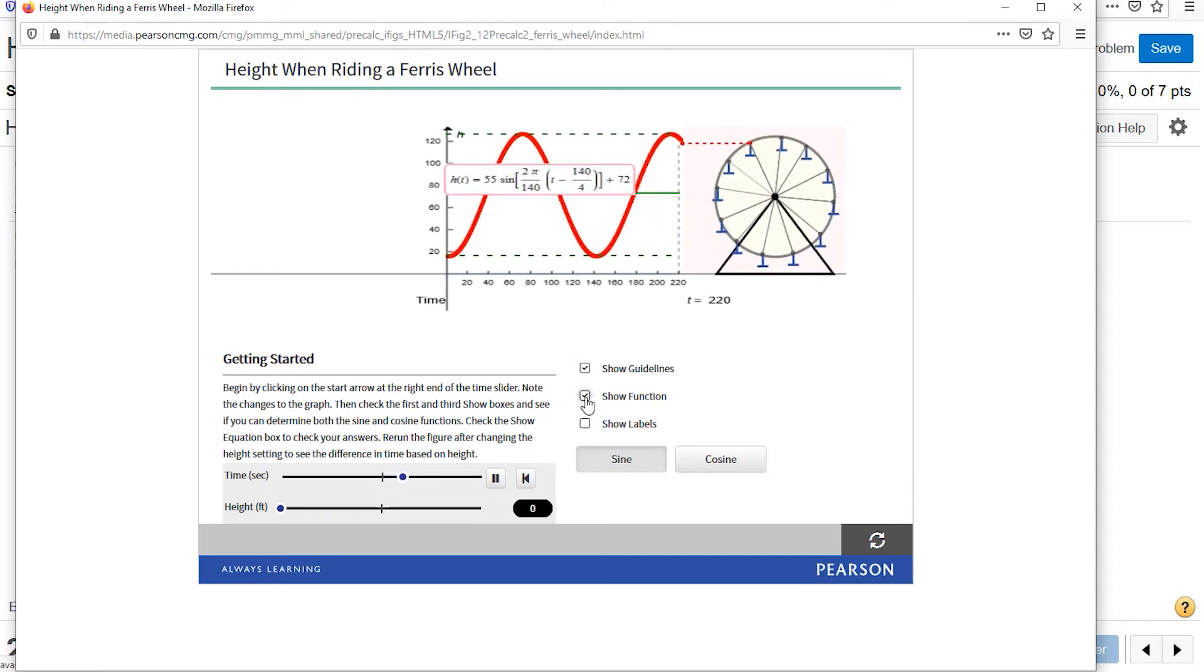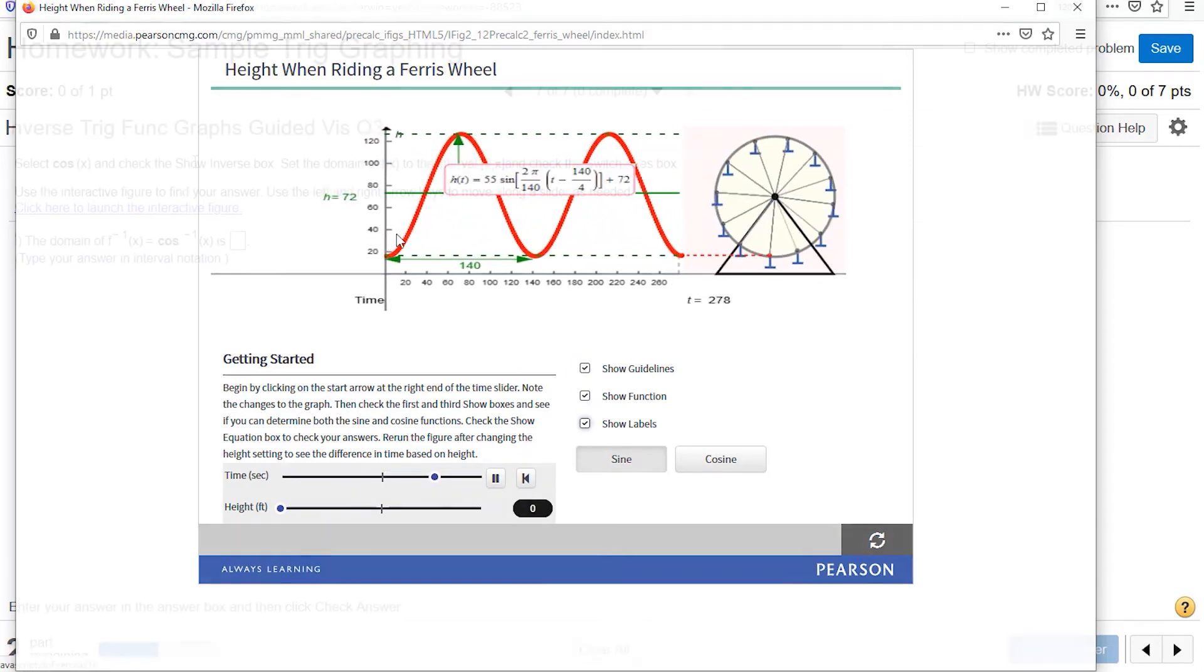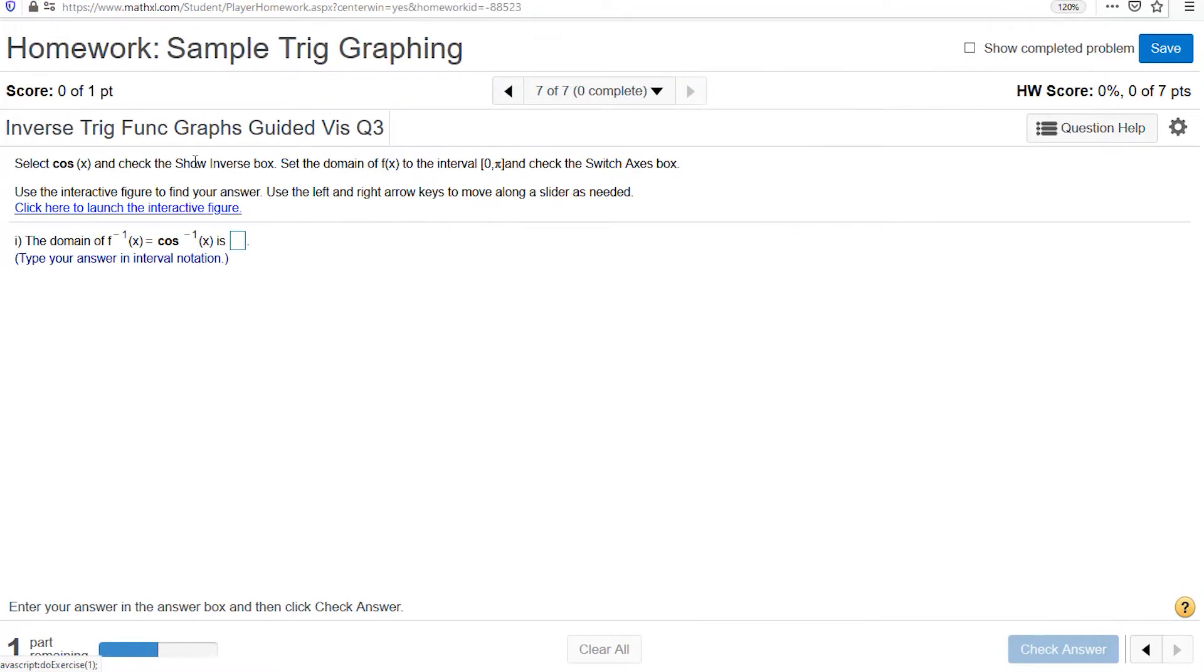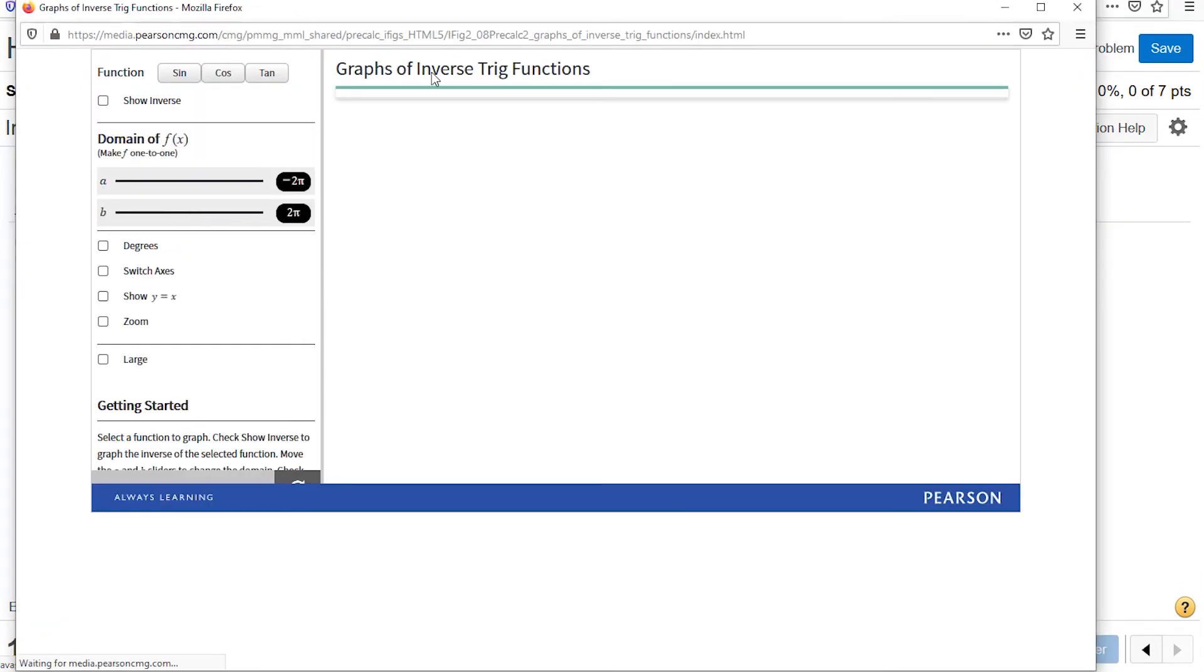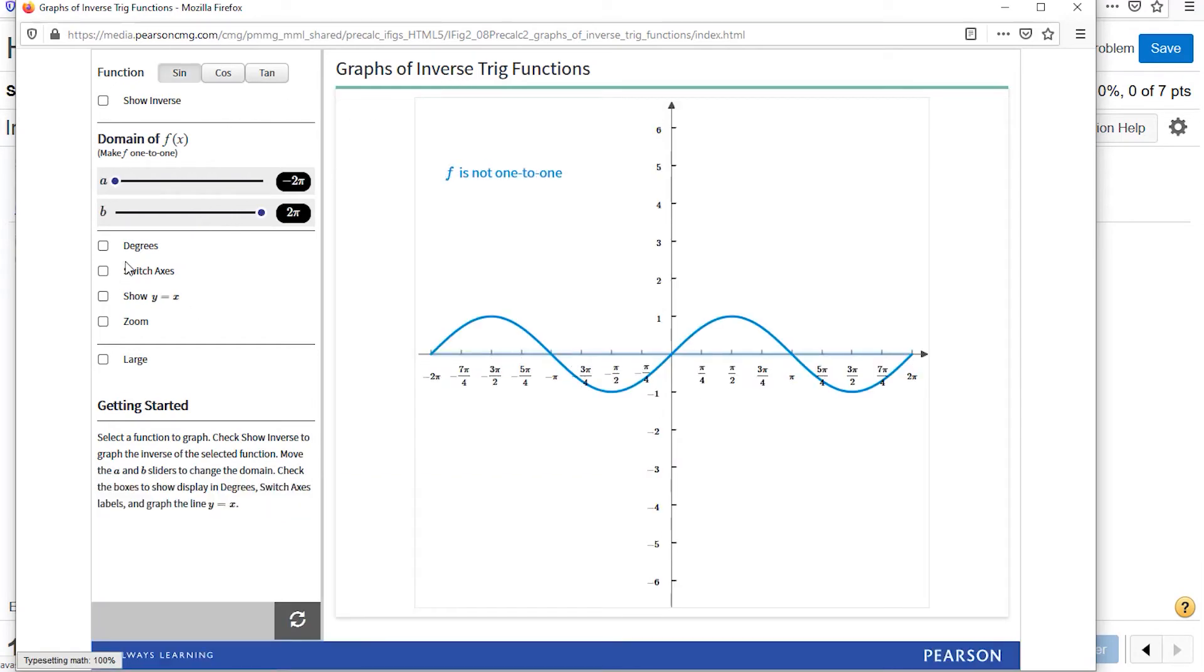Show grid lines, show the function, show labels. In my experience students can really struggle with the visualization of inverse sine and cosine and tangent. This particular interactive figure allows you to show the inverse, see that it is not a one-to-one function, and then start restricting your domain to see where does this become a one-to-one function. So I can restrict a and restrict b down to the point where I'm seeing oh there is the one-to-one function of inverse sine.